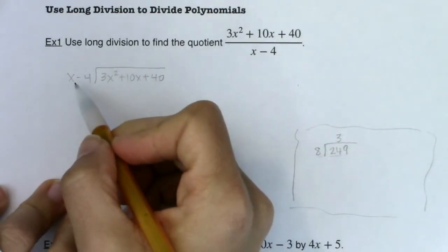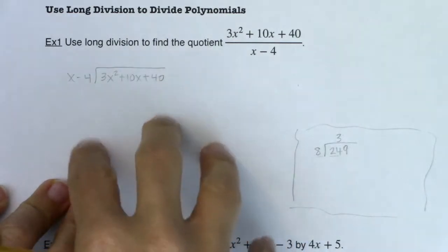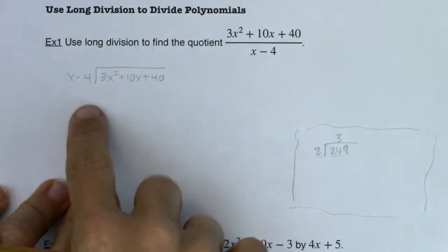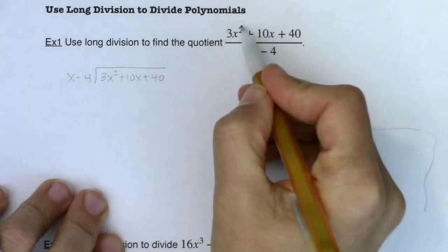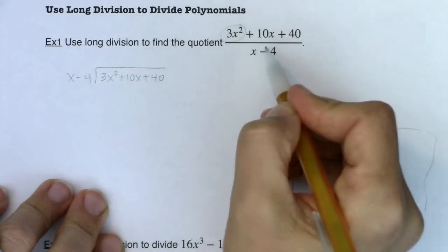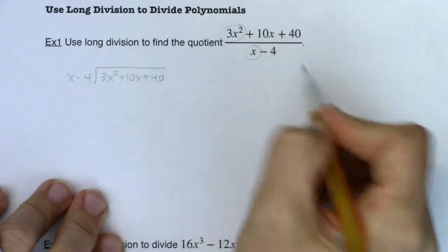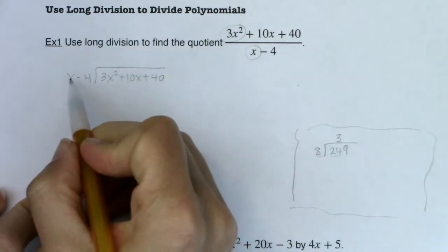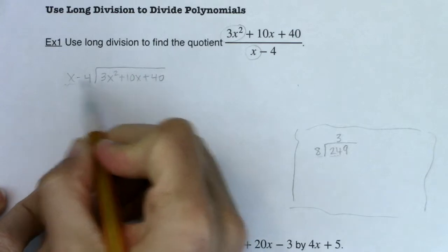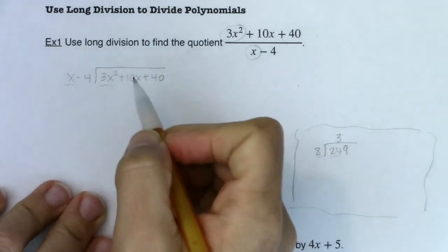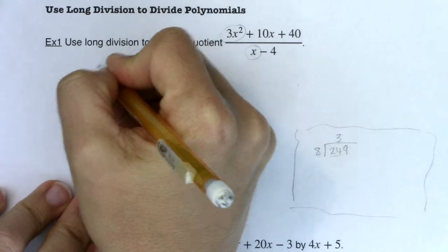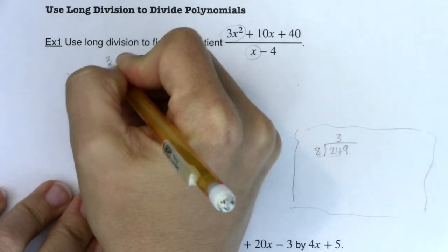And so I'm going to do the same thing here, but we're only going to be concerned with the leading term in both the numerator and the denominator. So for right now, all I care about is the 3x squared because that's the lead term in the numerator, and the x because that's the lead term in the denominator. So you ask yourself, what do you need to multiply x by to get to 3x squared? And the answer to that is I would need to multiply x by 3x.